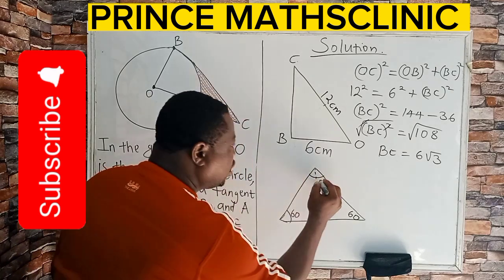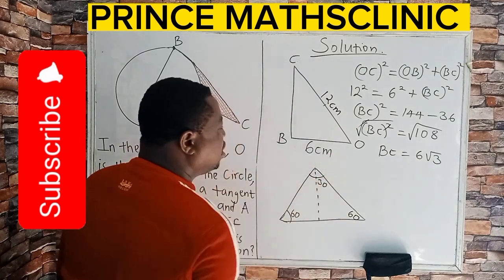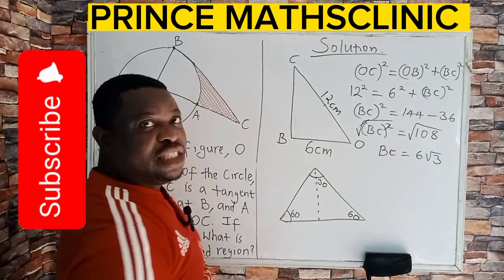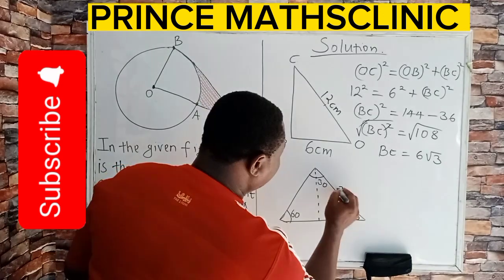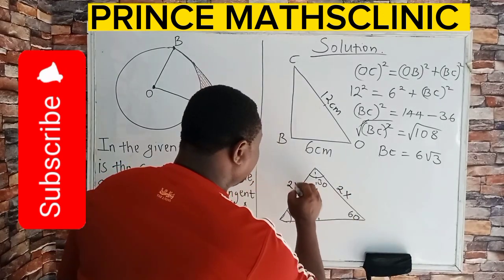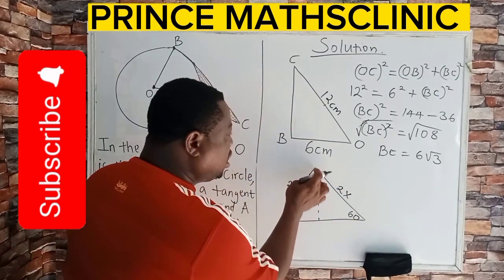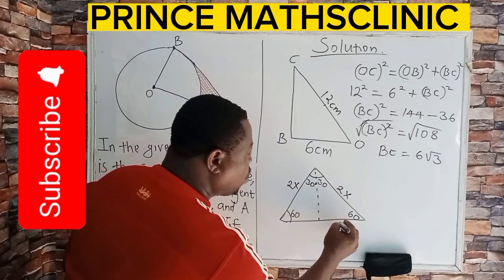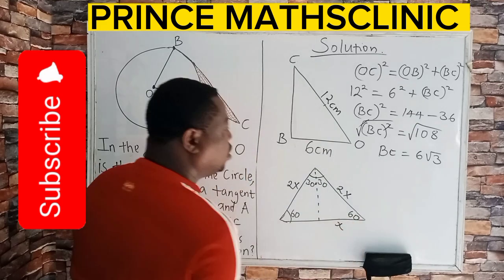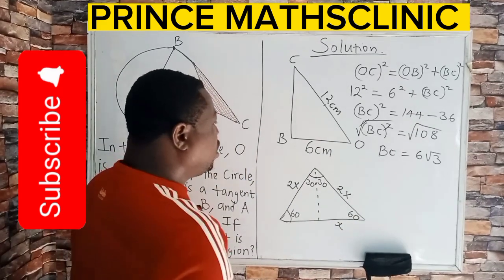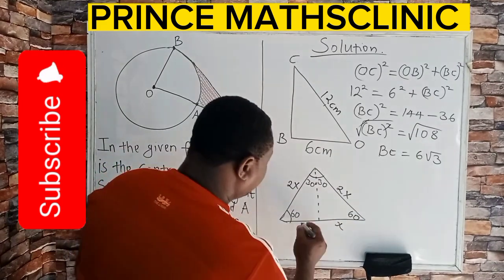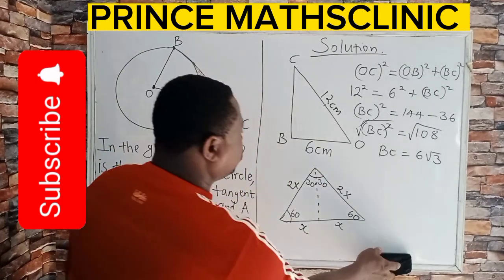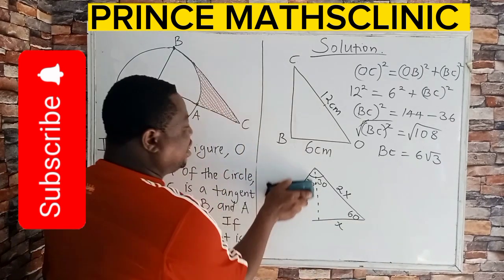So if I split this into two, it has bisected this 60 degrees, so this becomes 30 degrees. If all the sides are equal, that is if they are 2x, this is 2x, this is 2x, this is also 2x. But since this line bisects the angle into two, this becomes x. So I'm going to delete one part of this triangle to have a right angle triangle. So let me remove this part.